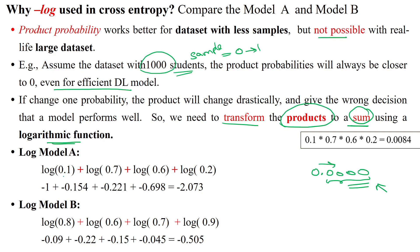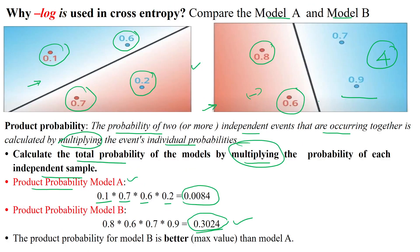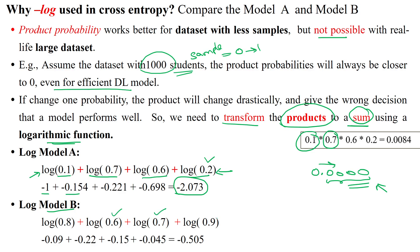For example, we take the 0.1 probability value and apply the logarithm: log(0.1), then log of the second sample's probability, log(0.6), log(0.2), and so on for all four samples of model A, getting negative values. For model B, applying the logarithm gives log(0.8) + log(0.6) + log(0.7) + log(0.9), resulting in minus 0.505. We see that we are getting negative values, but loss should always be a positive value — error should be in the positive range.